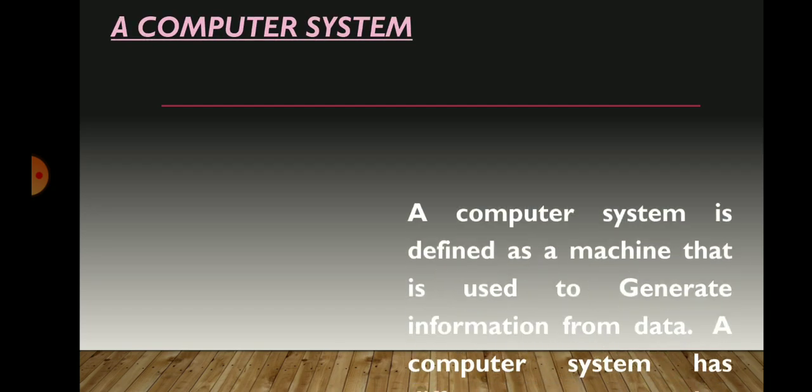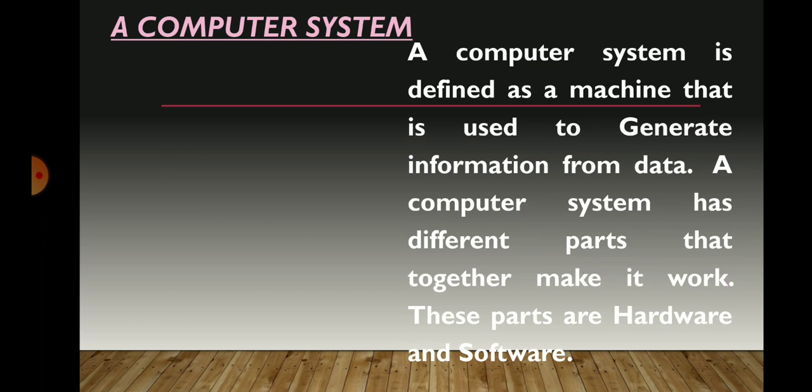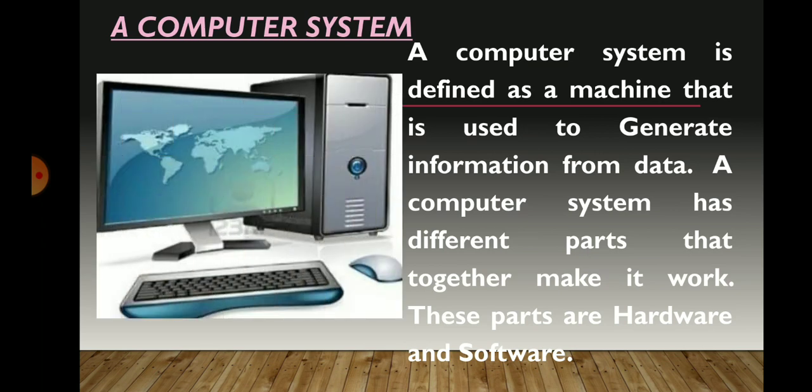A computer system is defined as a machine that is used to generate information from data. A computer system has different parts that together make it work. These parts are hardware and software.